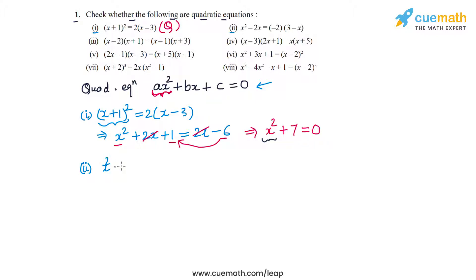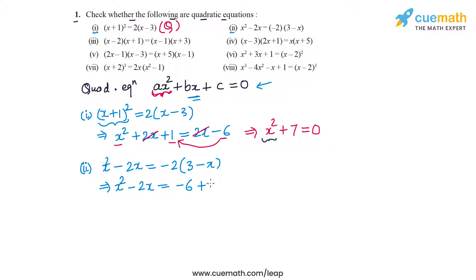In part two, the equation is x² − 2x = −2(3 − x). We expand the right side to get −6 + 2x. Bringing the terms from the right hand side to the left hand side, we get x² − 2x − 2x, which is −4x, and −6 becomes +6 on the left side. So the equation becomes x² − 4x + 6 = 0.